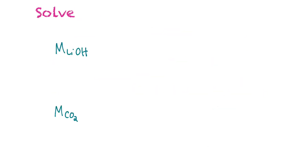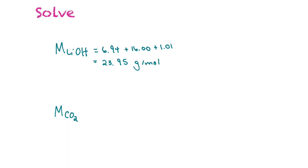The first thing we need to do is find the molar mass of each compound. The molar mass of lithium hydroxide equals the molar masses of its elements: 6.94 + 16.00 + 1.01 = 23.95 grams per mole. We'll use this value shortly to figure out our relationships.